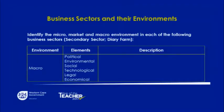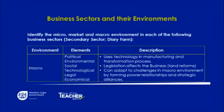Moving on to the macro environment of the secondary sector of the dairy farm. The elements are political, environmental, social, technological, legal, and economical. The description is that they use technology in the manufacturing and transformation process. Legislation affects the business, and they can adopt or adapt to challenges in the macro environment by forming power relationships and strategic alliances. Management has no control over legislation or technology but must comply — they have zero control over this particular environment.